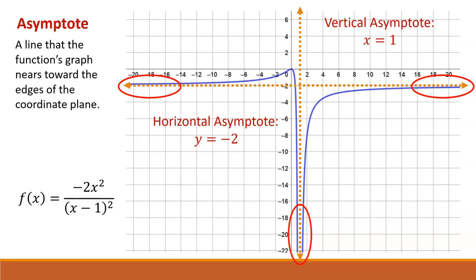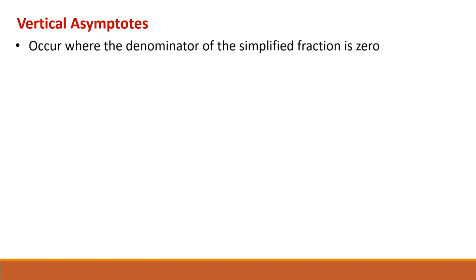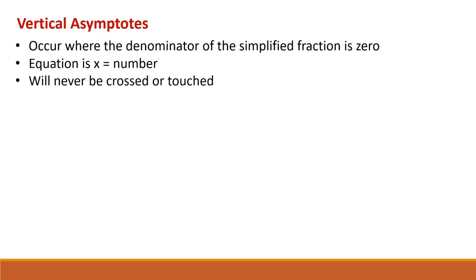But what if we don't have the graph of the function? How can we find those vertical and horizontal asymptotes? Let's start with the vertical asymptotes. Vertical asymptotes occur where the denominator of the simplified fraction is 0. The equation of our vertical asymptotes will be x equals a number, where that number makes the denominator of the simplified fraction equal to 0.